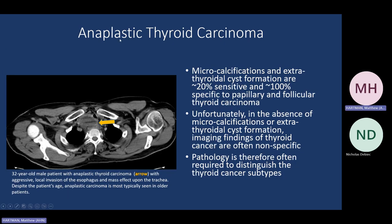The worst thyroid cancer is the anaplastic. These are older individuals who get a rapidly growing neck mass that grows into the mediastinum — you can see the trachea and esophagus being encroached upon. A horrible prognosis, typically seen in patients over the age of 60 or 70.